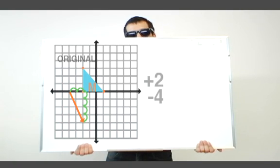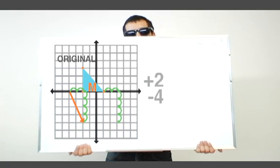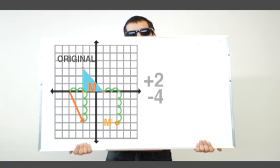Let's start with point M. Translate point M two units to the right and four units down. Then do the same to the other points of the triangle.